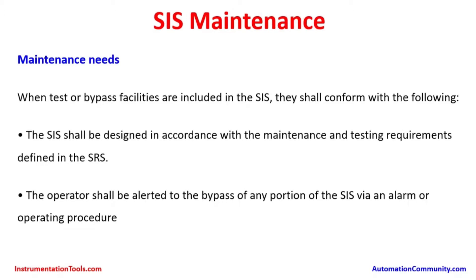Maintenance needs. When test or bypass facilities are included in the safety instrumented system, they shall conform to the following. The SIS shall be designed in accordance with the maintenance and testing requirements defined in the SRS — safety requirements specification. The operator shall be alerted to the bypass of any portion of the SIS via an alarm or operating procedure. Whenever a safety instrument system is taken out of service, the operator should be highly alerted, so that in case of any hazard happening in that area, he will have to take manual action to contain the situation.